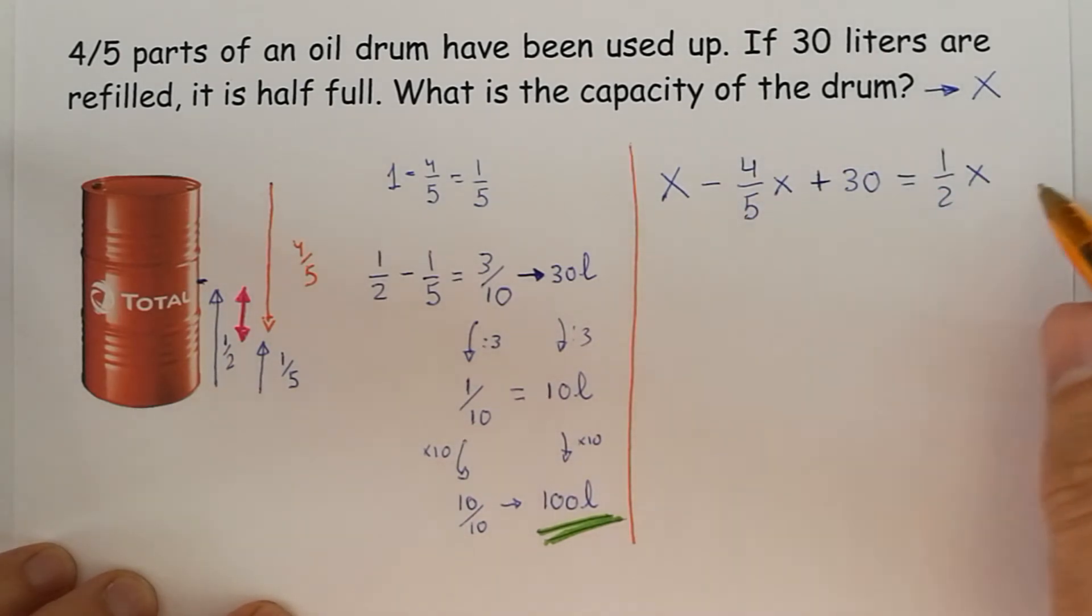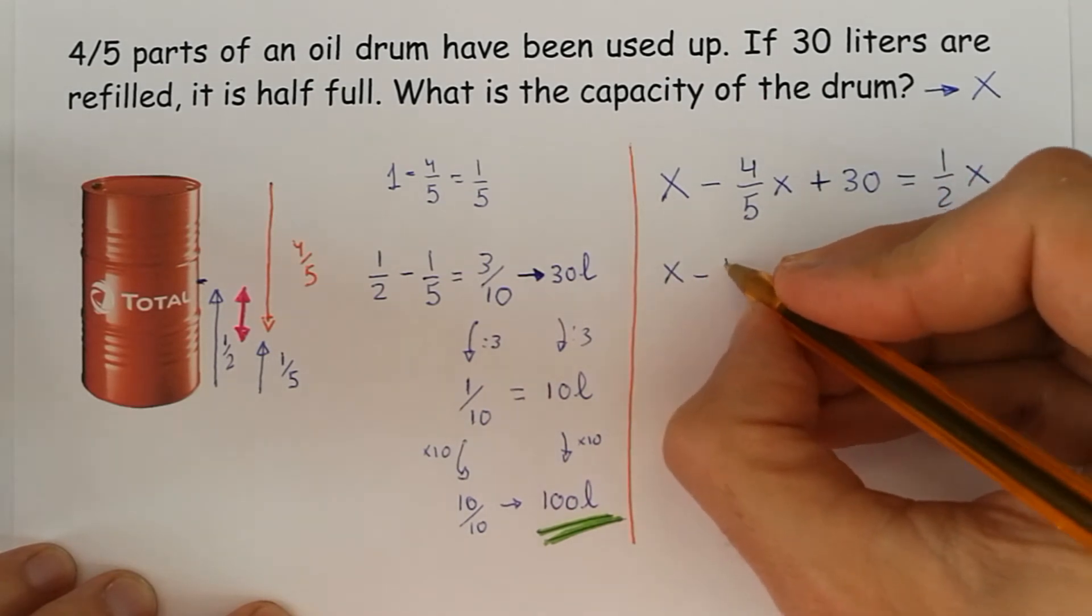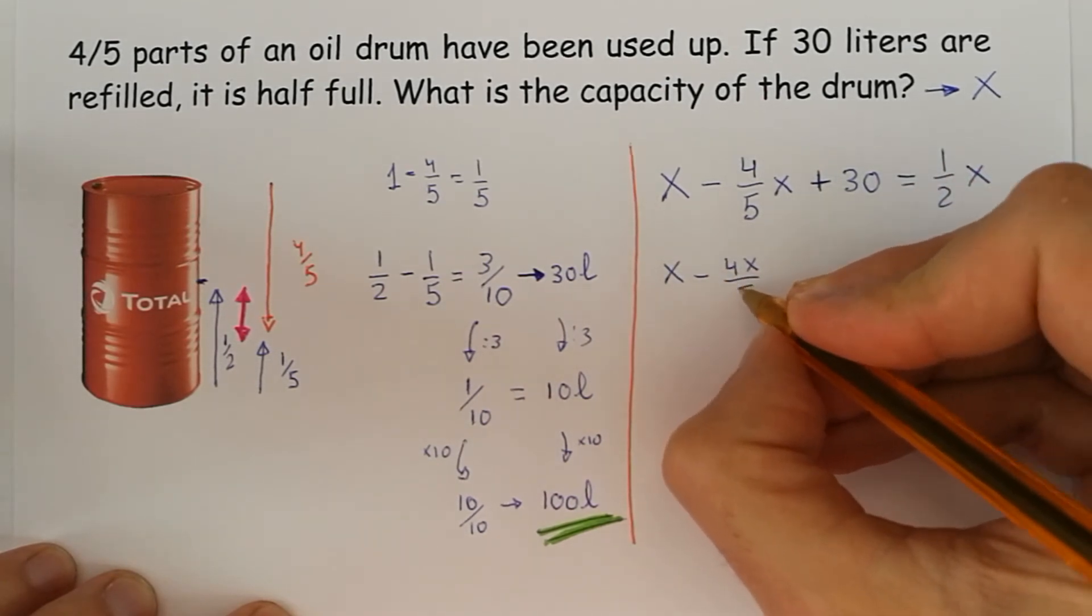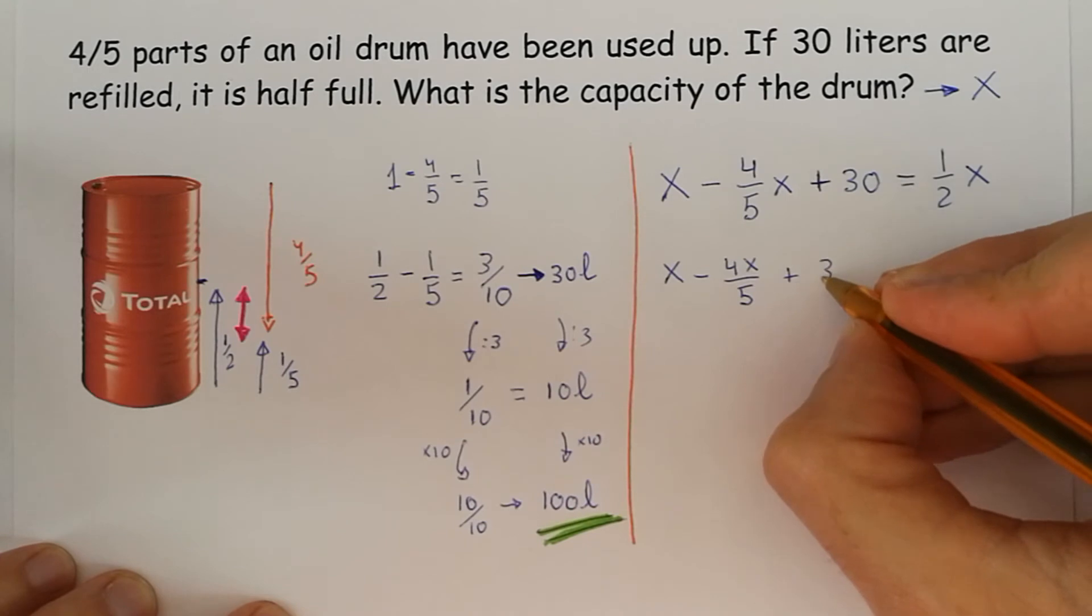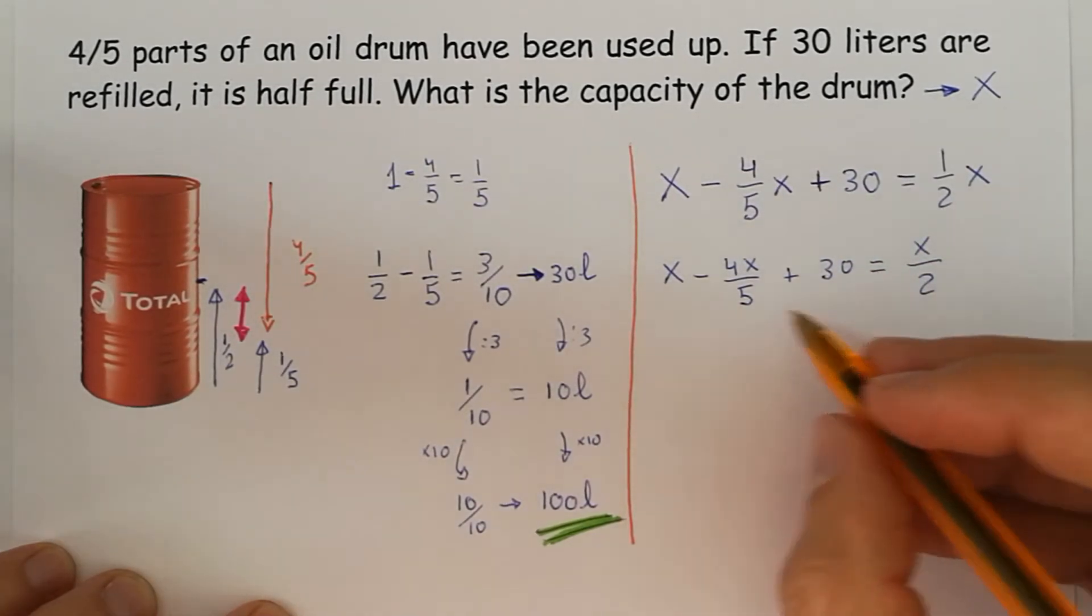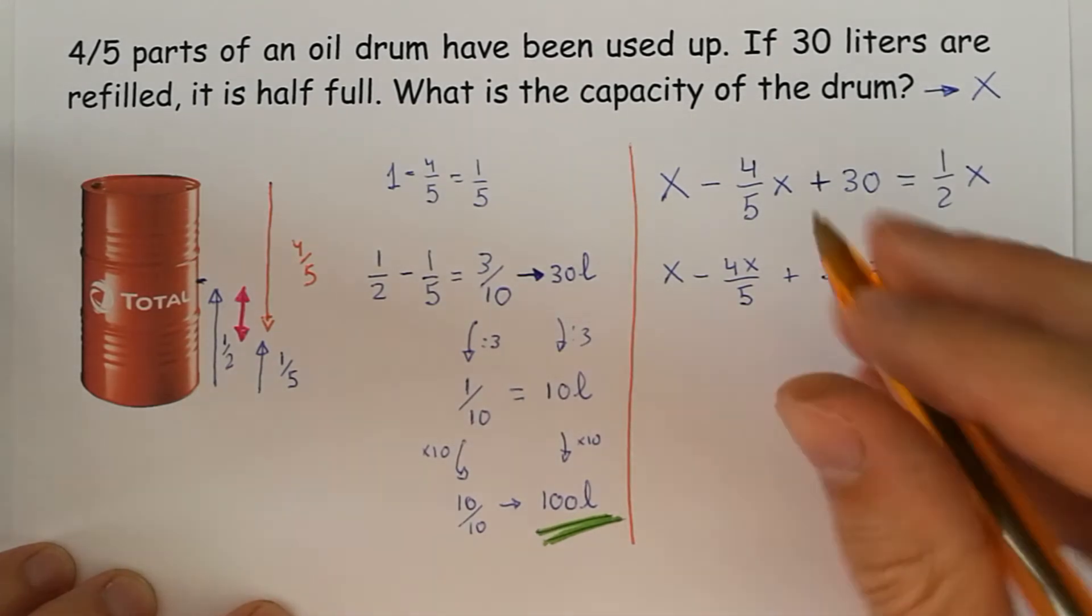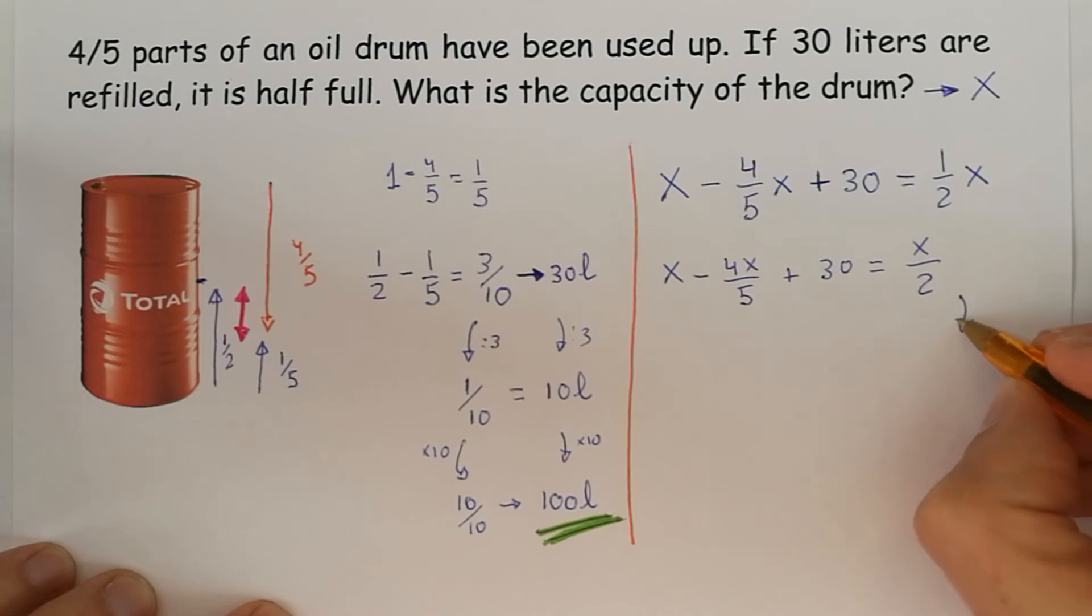So now, first of all, let's multiply what we can for X over 5, 30 stays the same, and here's X halves. The second step is to get rid of the denominators. We multiply every side, both sides, by 10, that is the common denominator.